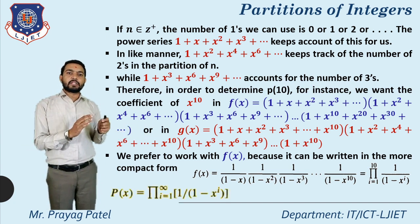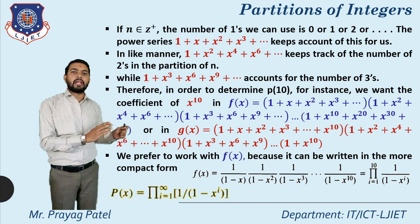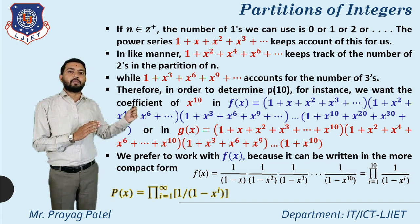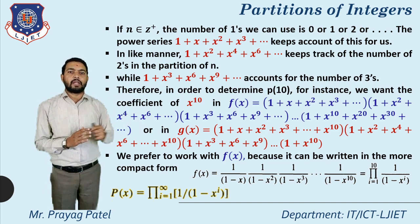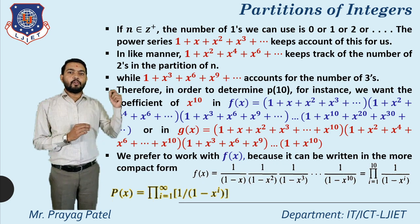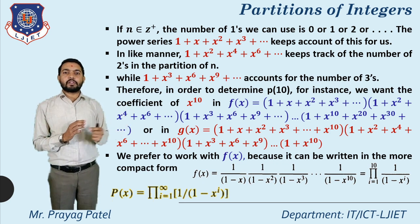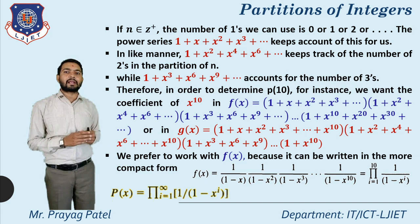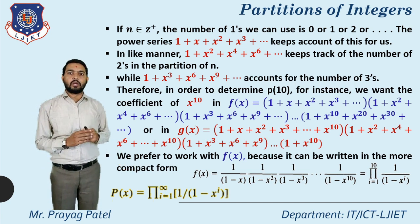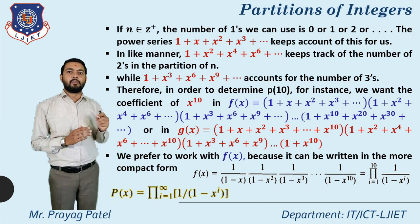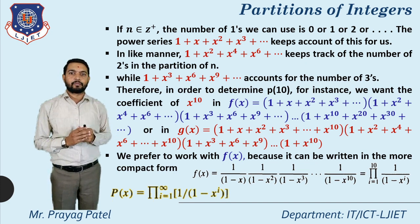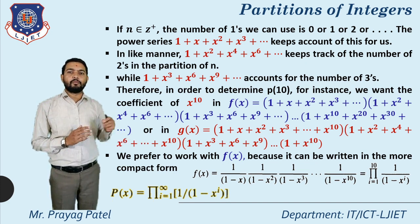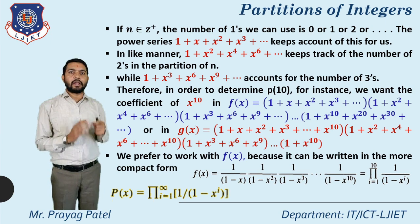For 10, f(x) equals the product from i=1 to 10 of 1/(1-xⁱ). If we want to write this equation for infinitely many elements, then p(x) equals the product from i=1 to infinity of 1/(1-xⁱ). This is the common form for finding the partition p(x).